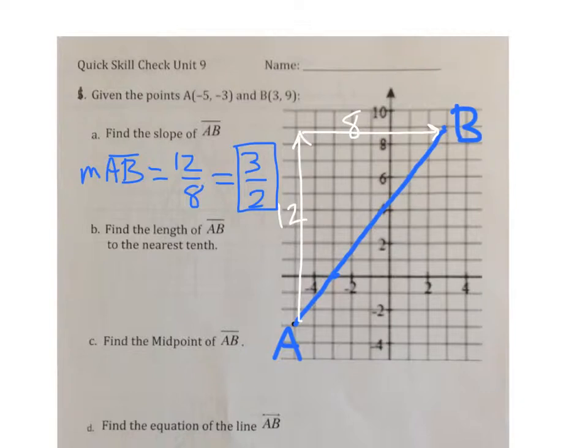To find the length of AB, we can use these original numbers, 12 and 8, and use the Pythagorean theorem. Or a more direct way is to square root the a squared plus the b squared. This gives us the square root of 208.